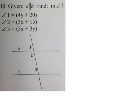I know that 1 and 2 are supplementary. I know that 2 and 3 are supplementary. And I also know that 1 and 3 are congruent. 1 and 3 are congruent because they're corresponding angles.